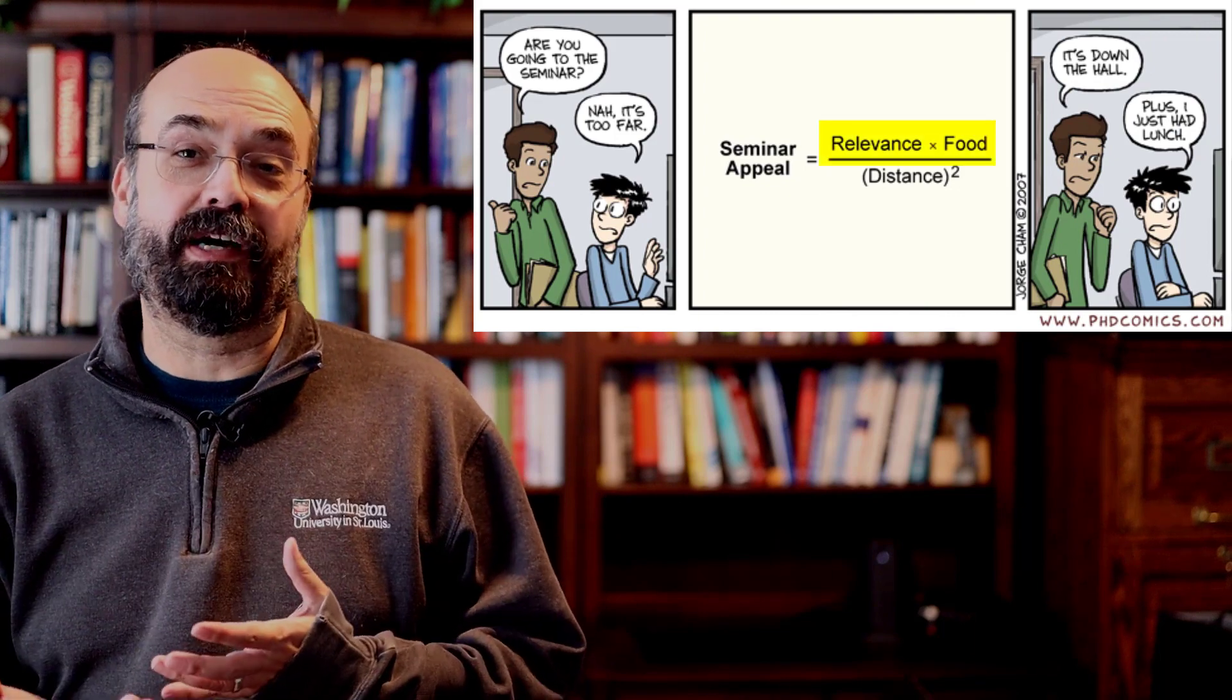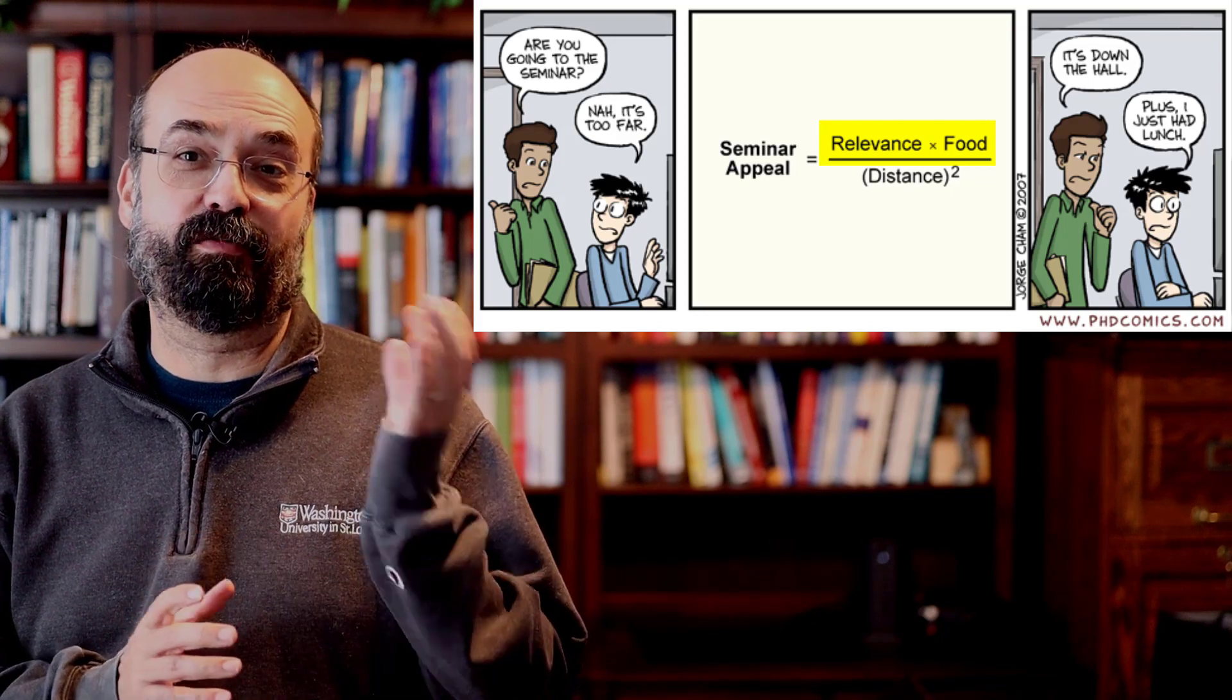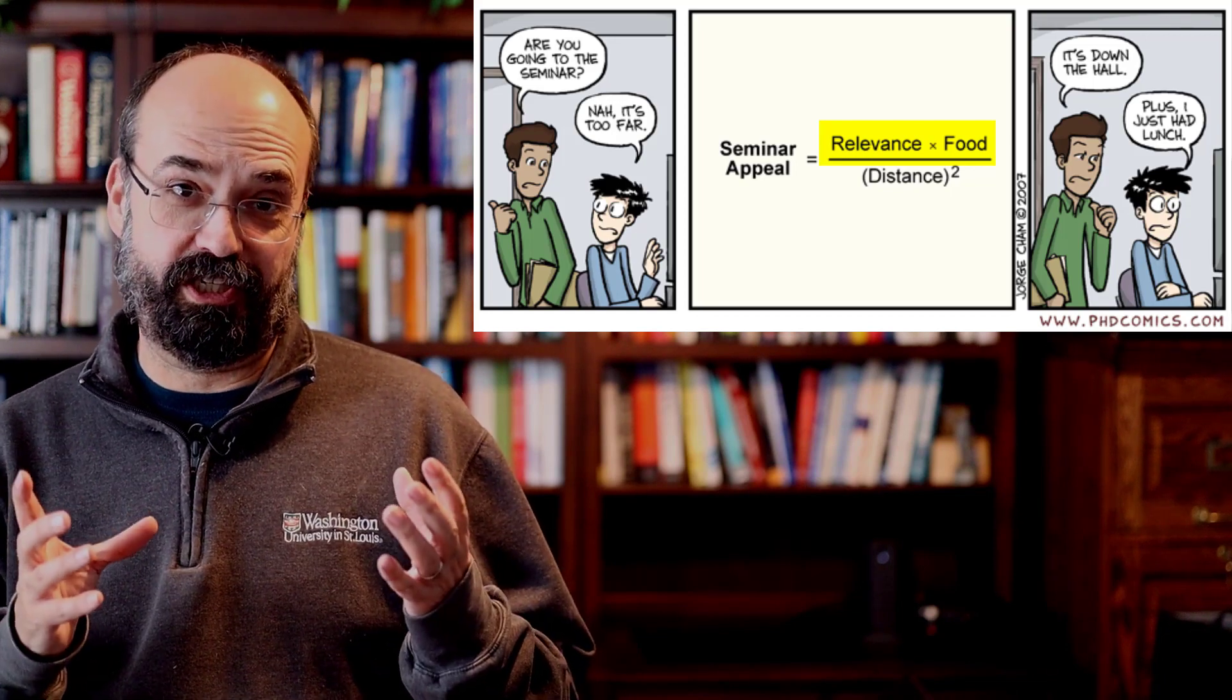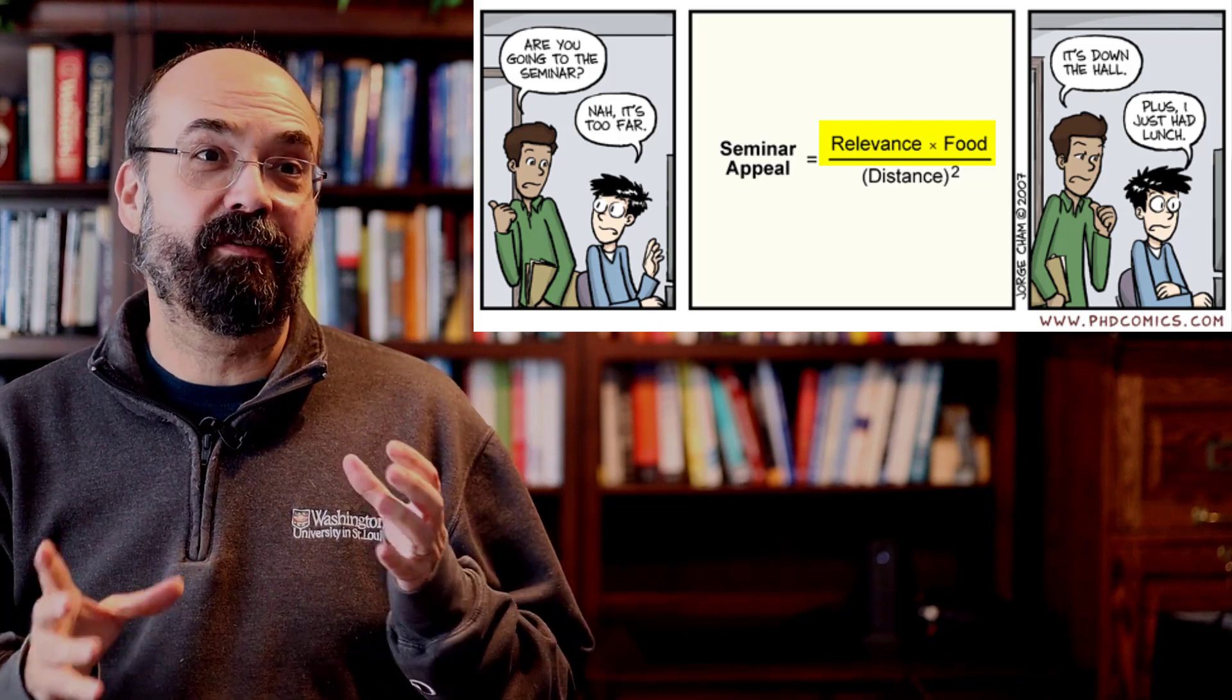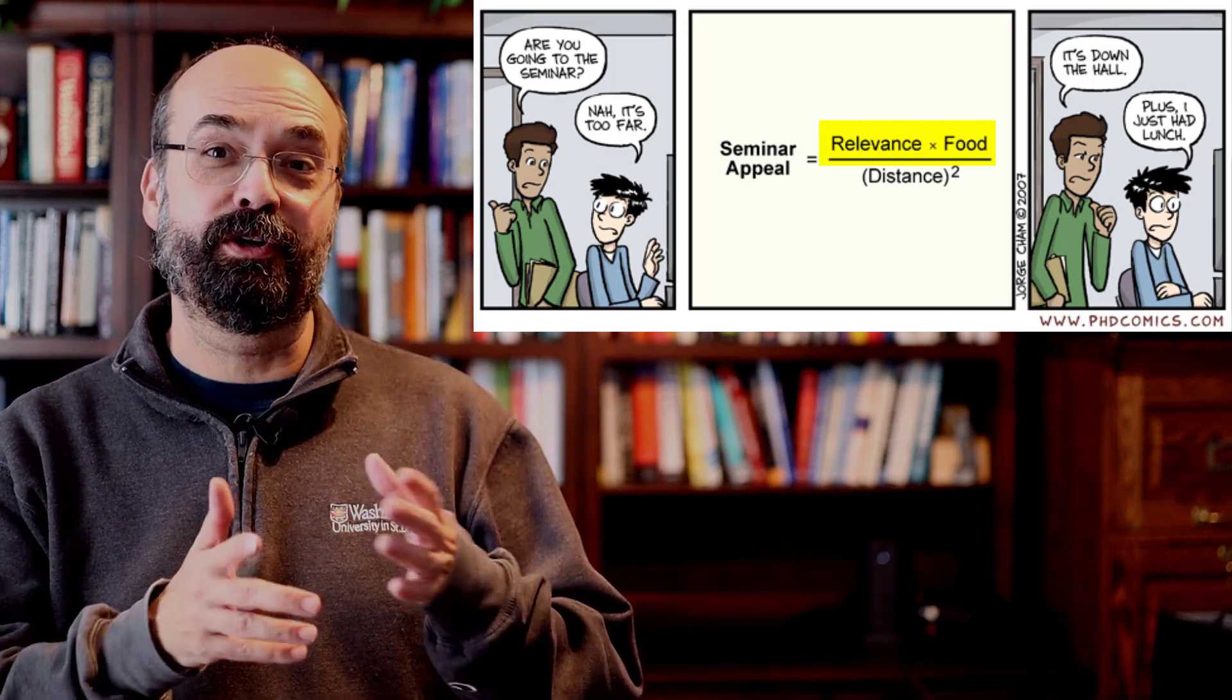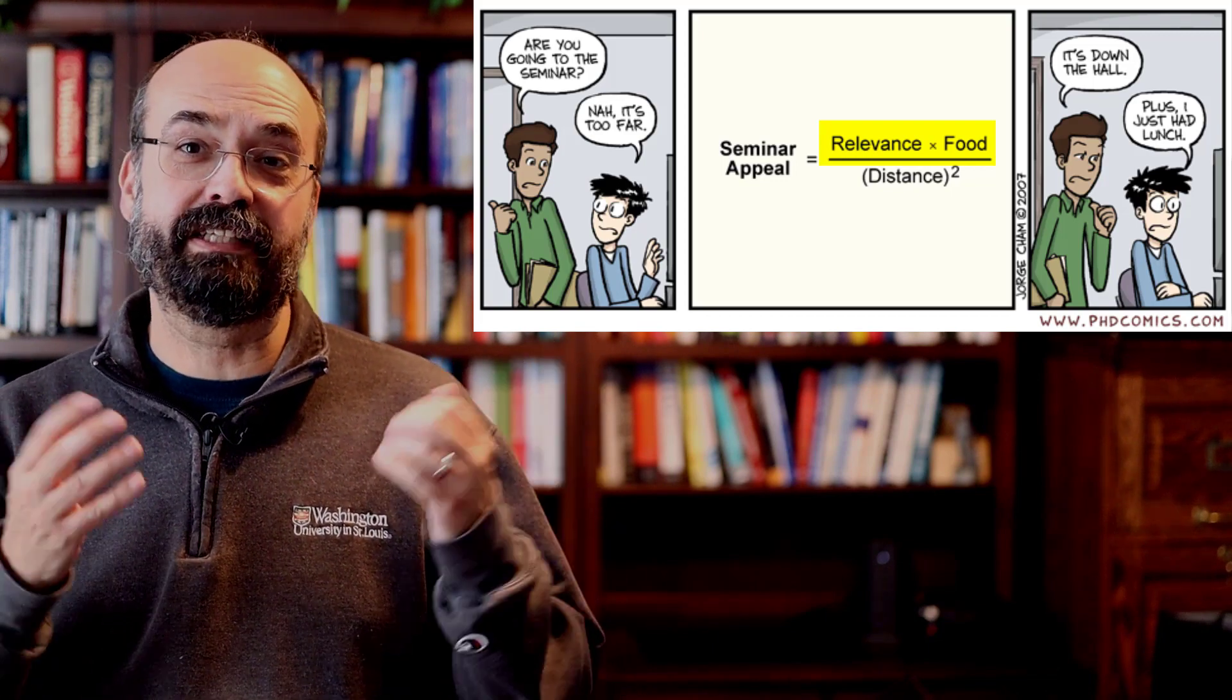So now using those building blocks, let's look at this comic again. You've got relevance times food quality. So those two things, they're both important to you. You're looking at the relevance and you're looking at the food quality. Now, maybe food quality would be more important to you. So you might square that one. Or you might have another value in here, which they allude to in the final frame. How hungry am I? When have I last eaten? You may actually then do food minus the time that you've last eaten. Something such as that.